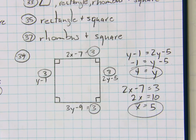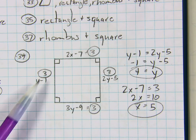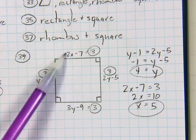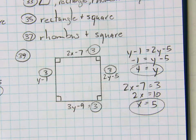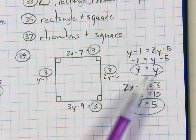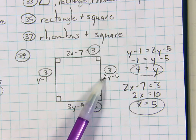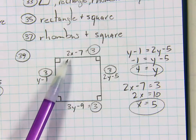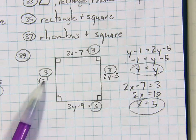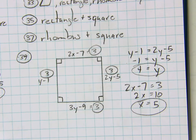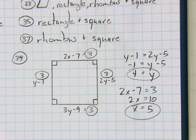Number 39 is a square, so all sides are congruent. Setting the two simplest sides equal: Y minus 1 equals 2Y minus 5 gives Y equals 4. Plugging in: 4 minus 1 is 3 and 2 times 4 minus 5 is 3 — so all sides are 3. Then 2X minus 7 equals 3 gives X equals 5. Work smarter, not harder — pick the easiest pair of sides to set equal.